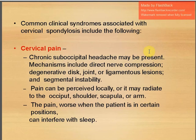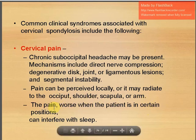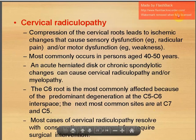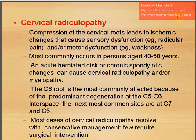Radiculopathy from compression of cervical roots leads to ischemic changes causing sensory dysfunction — radicular pain — and motor dysfunction like weakness. Most commonly, persons aged 40–50 years are vulnerable. Acute herniated disc or chronic spondylotic changes may cause cervical radiculopathy or myelopathy. The C6 root is most commonly affected, followed by C5-C6, then C7. Most cases of cervical radiculopathy resolve with conservative management; few require surgical intervention.